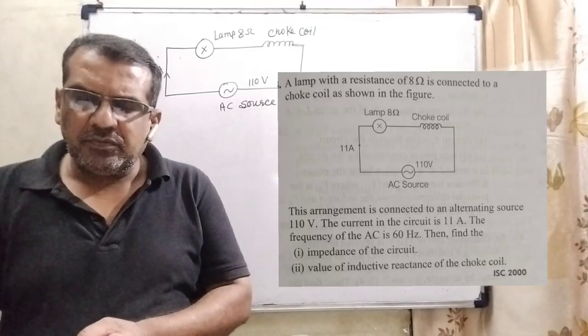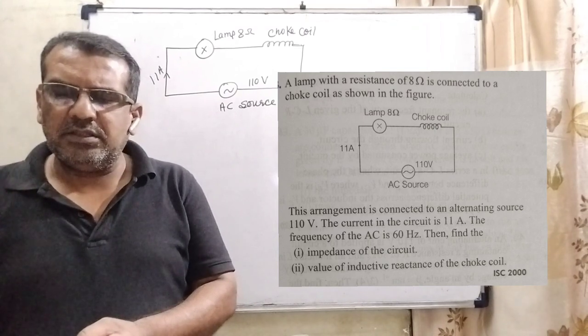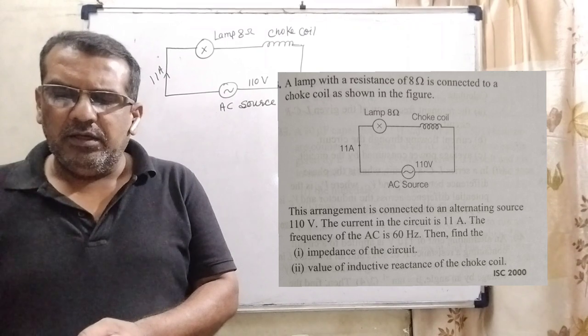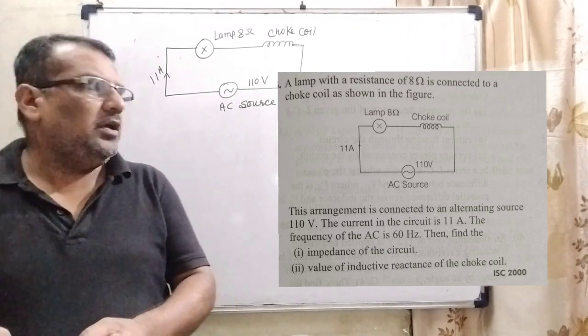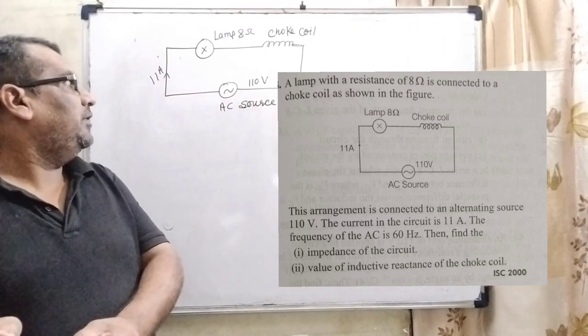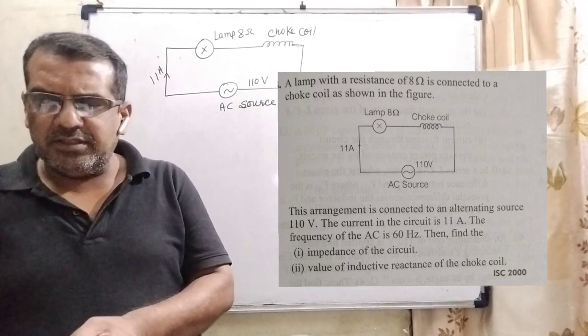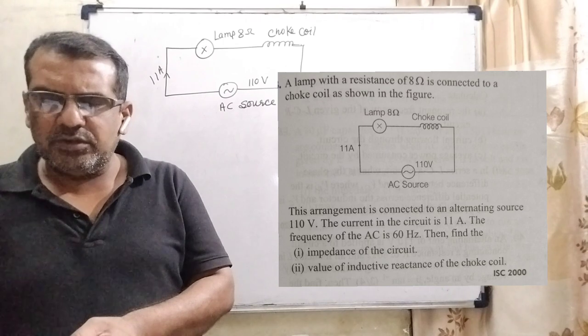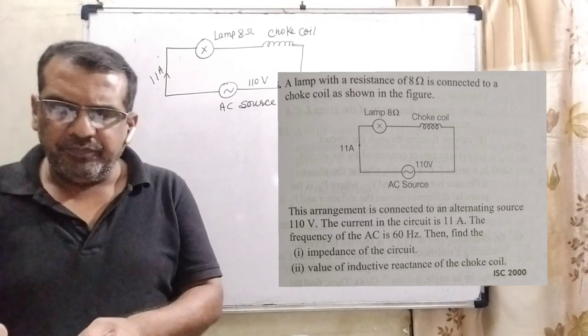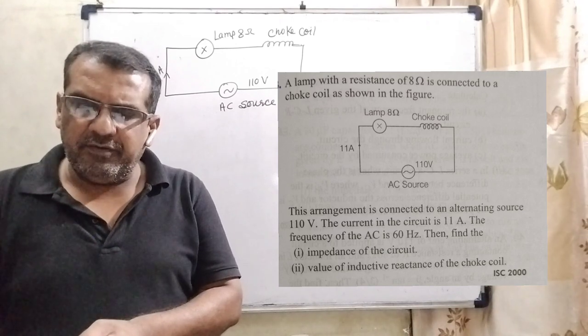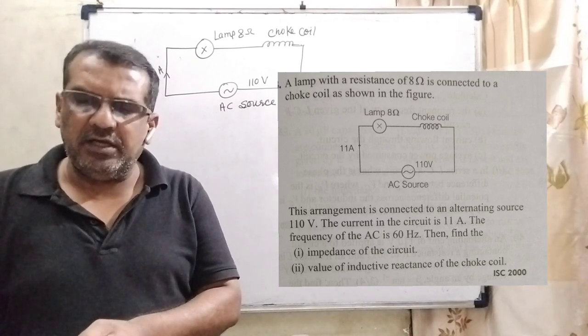Now, here is the question. A lamp with a resistance of 8 ohm is connected to a choke coil as shown in the figure. Here we have given the figure. This arrangement is connected to an alternating source 110 volt. The current in the circuit is 11 ampere. The frequency of AC is 60 hertz.